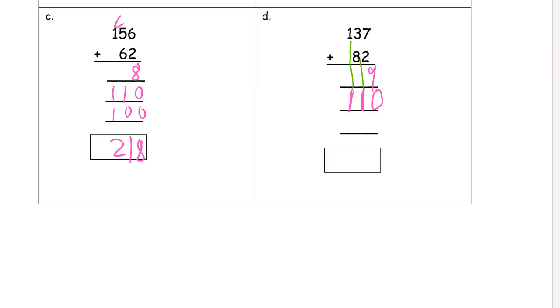So then we have the hundreds. There's only one hundred to write down because there's no other hundreds to add. And now we have nine plus zero plus zero. That's nine. And one plus zero, that's one. And one plus one is two. Two hundred nineteen.